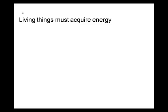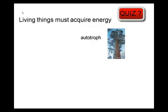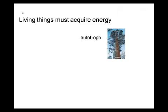Another characteristic of life is that living things must acquire energy. In fact, all of the other characteristics we'll discuss require that the organism have energy. Organisms can acquire energy in different ways. Some organisms we call autotrophs — 'auto' means self, 'troph' refers to energy, sometimes translated as self-feeders. These are photosynthetic organisms: plants, algae, and some bacteria that capture the energy in sunlight to make their own food.